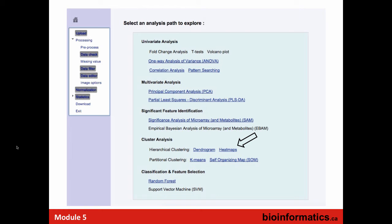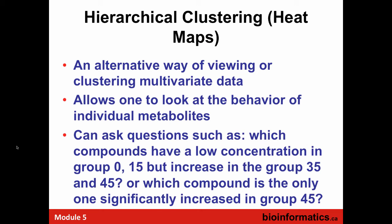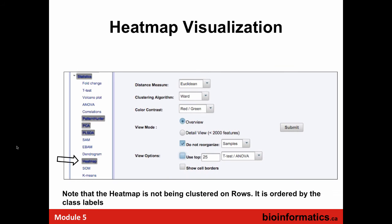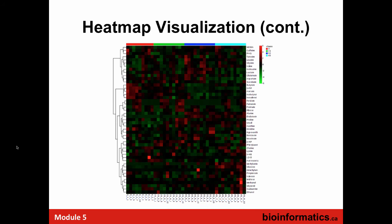We can now go into some cluster analysis. We've already done a little heat mapping with the ANOVA. We can ask questions about how things are clustering, which have low concentrations in one group but increase in another, how are things significant, and look at behaviors of individual metabolites. Using the left panel to navigate down, we ran the PCA, PLSDA, and we can see EBAM, SAM, Dendrogram. We can go to heat map — clicking on that with default parameters gives us a red-green heat map. You can see it's clustered in the four groups — 0%, 15%, 30%, 40% at the top — with metabolites distributed through there.